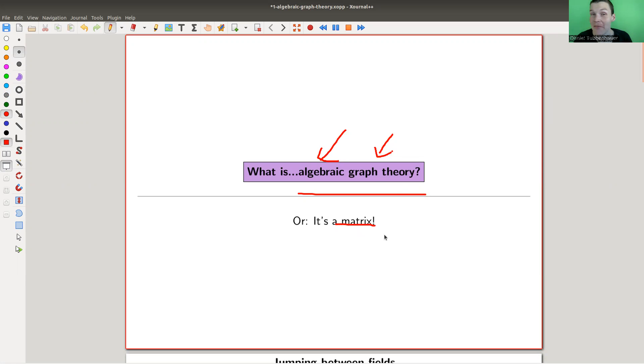Matrices and graphs, polynomials and graphs, whatever type of object in algebra you have and graphs. This is essentially one of the most underrated facts in mathematics altogether, but it's also one of the most applicable fields of mathematics. Algebra is one of the most powerful tools in mathematics.